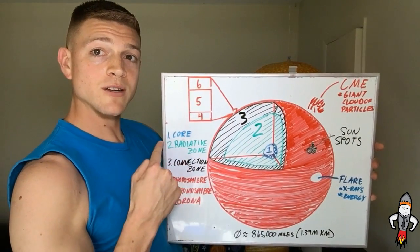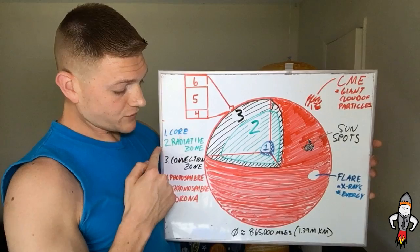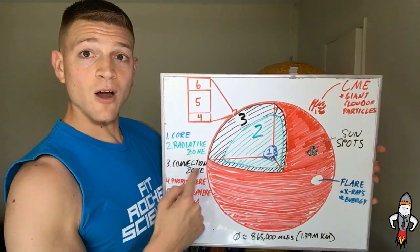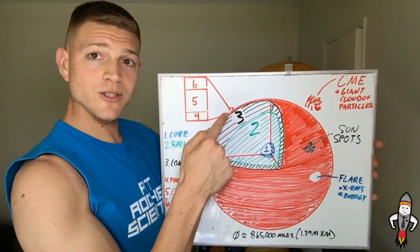So we got one, two, three for our inner layers: core, radiated zone, and convection zone. All right, so then we get right to the outer surface of the Sun.